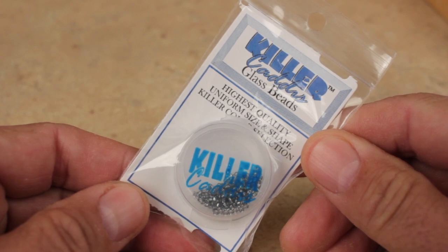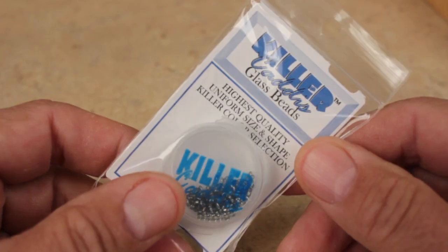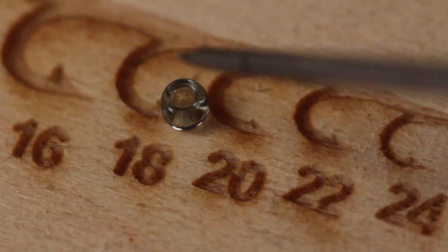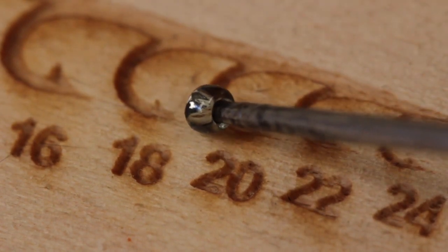The bead is really what distinguishes the Mercury Midge from other similar patterns. I prefer Killer Caddis glass beads. The midge sized gray glass with a silver core look great and really do resemble a small air bubble, especially underwater.